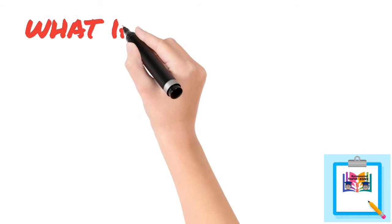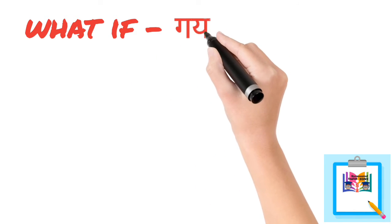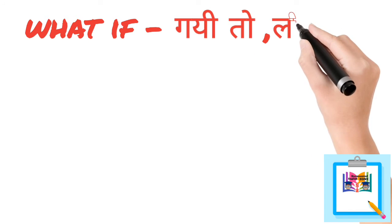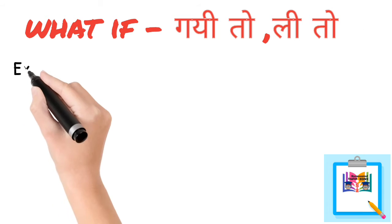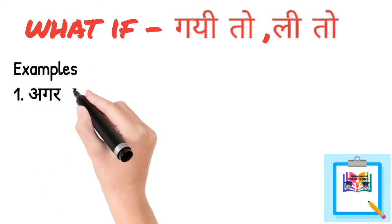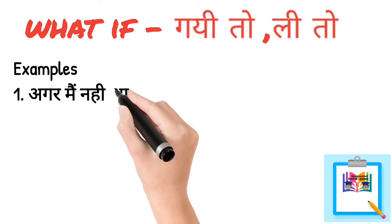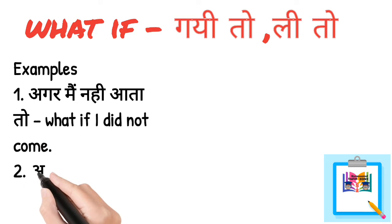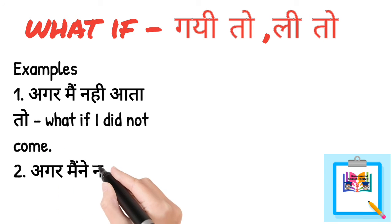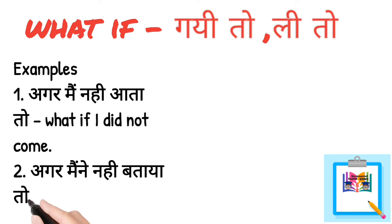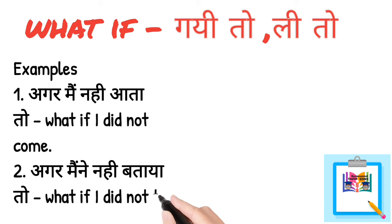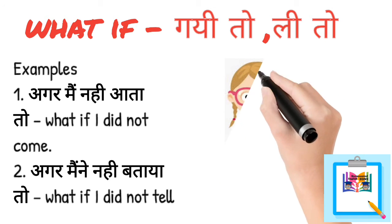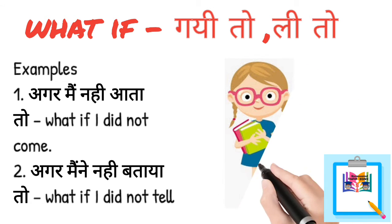What if — gehi toh gaito. Examples: Number one — Agar main nahi aata toh — What if I did not come? Number two — Agar main nahi bataya toh — What if I did not tell?